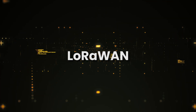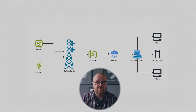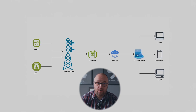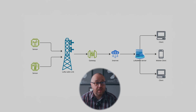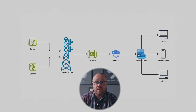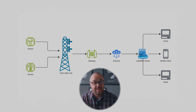LoRaWAN is the protocol that defines how devices using LoRa modulation communicate with the network. Contrary to LoRa, LoRaWAN is not patented — it's open and governed by the LoRa Alliance. The architecture of LoRaWAN includes end devices, gateways, a network server, and an application server. Each device sends data, gateways forward it to the network server, and the server manages authentication, routing, and aggregation. The application server then processes the data.